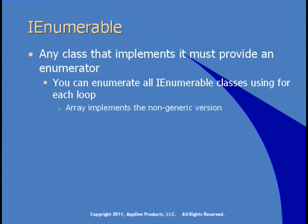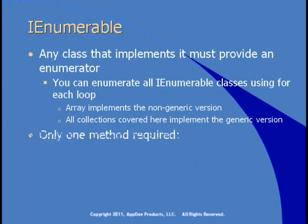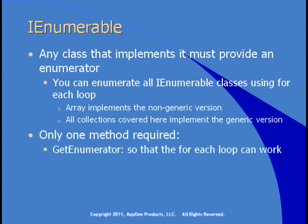You can enumerate through all IEnumerable classes using a for-each loop. The array implements the non-generic version of IEnumerable — that's why you can use a for-each loop with an array. All collections covered here implement the generic version of IEnumerable. There's only one method required: the getEnumerator method, so that the for-each loop can perform its work.